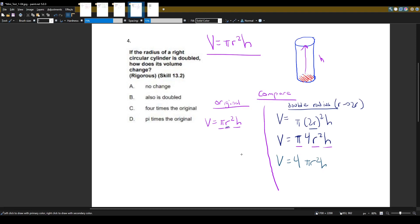So volume is equal to 4 pi r squared h. It looks like when we double the radius, our volume is 4 times the original. So the answer is C, 4 times the original.